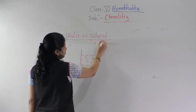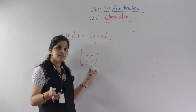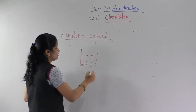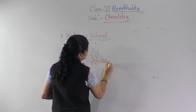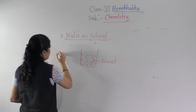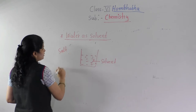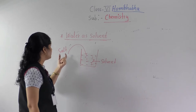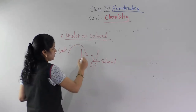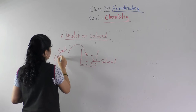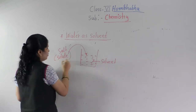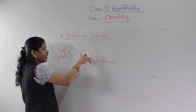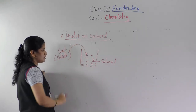Water is a solvent. Solvent means the substance in which we are going to add another substance. So water is a solvent. Now this salt — I am going to add the salt into this water. So this salt is known as a solute. Which substance we are going to add in water, that is known as a solute.